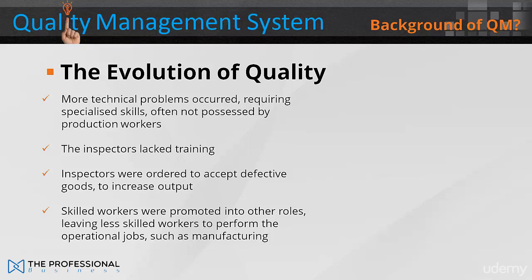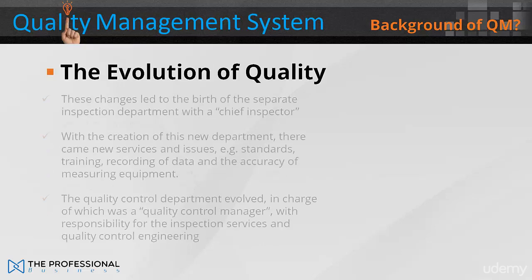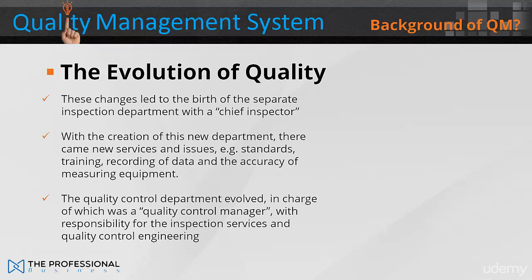The inspectors lacked training. Inspectors were ordered to accept defective goods to increase output. Skilled workers were promoted into other roles, leaving less skilled workers to perform the operational job, such as manufacturing. These changes led to the birth of a separate inspection department with a chief inspector reporting to either the person in charge of manufacturing or the works manager.